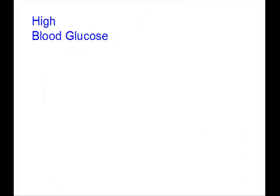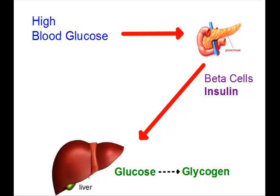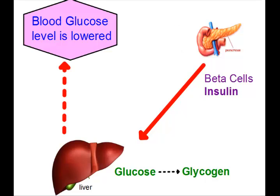Let's look first at what happens with high blood glucose levels — if there's lots of glucose in the blood. That causes some cells in the pancreas called beta cells to release a hormone called insulin. The insulin travels to the liver, where it can cause glucose to be stored as glycogen. And if that happens, that causes the blood glucose levels to be lowered.